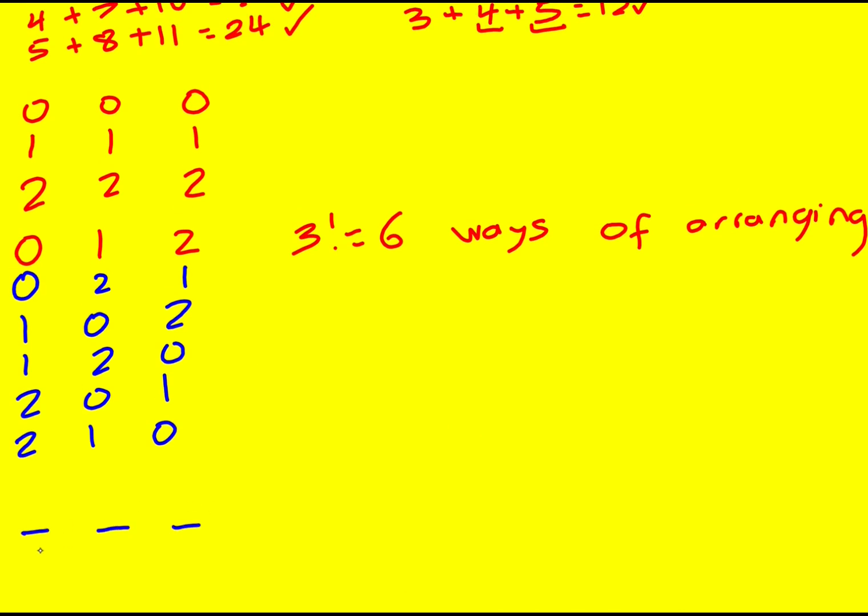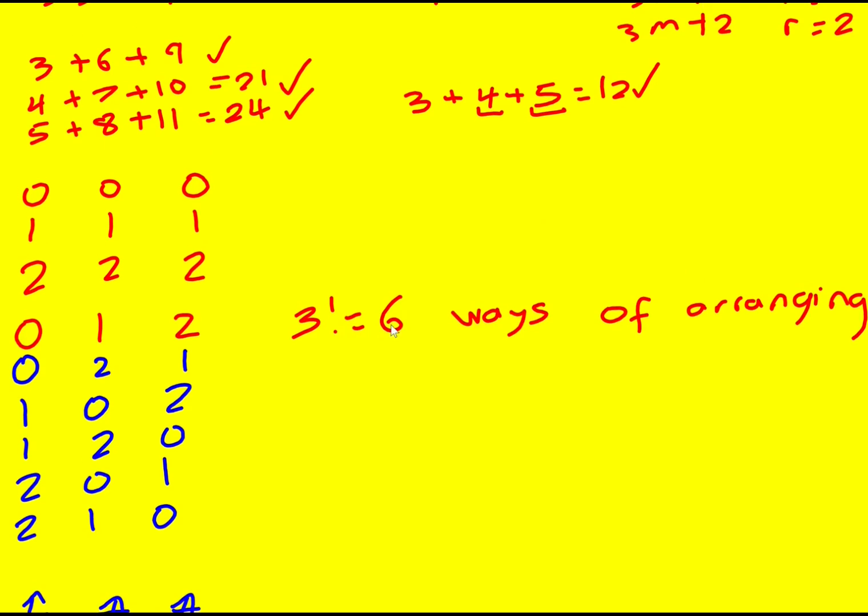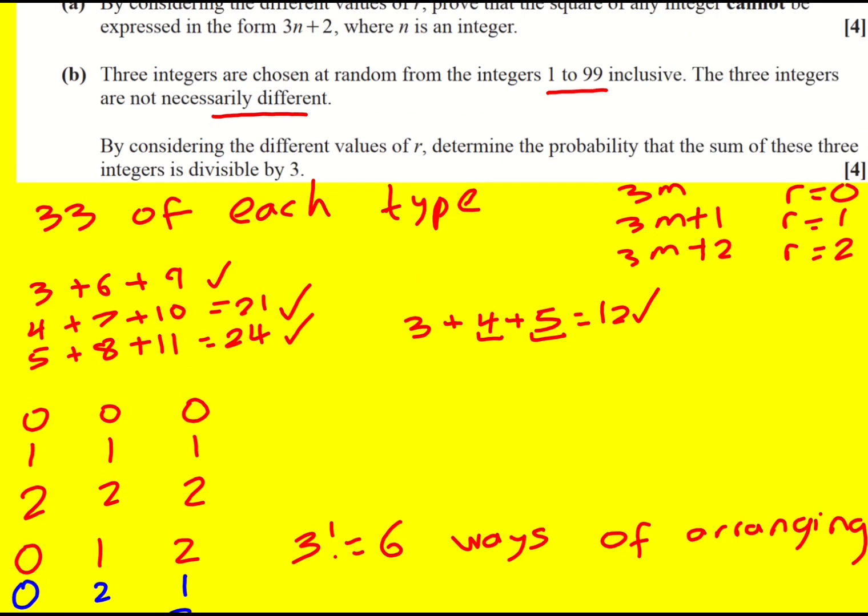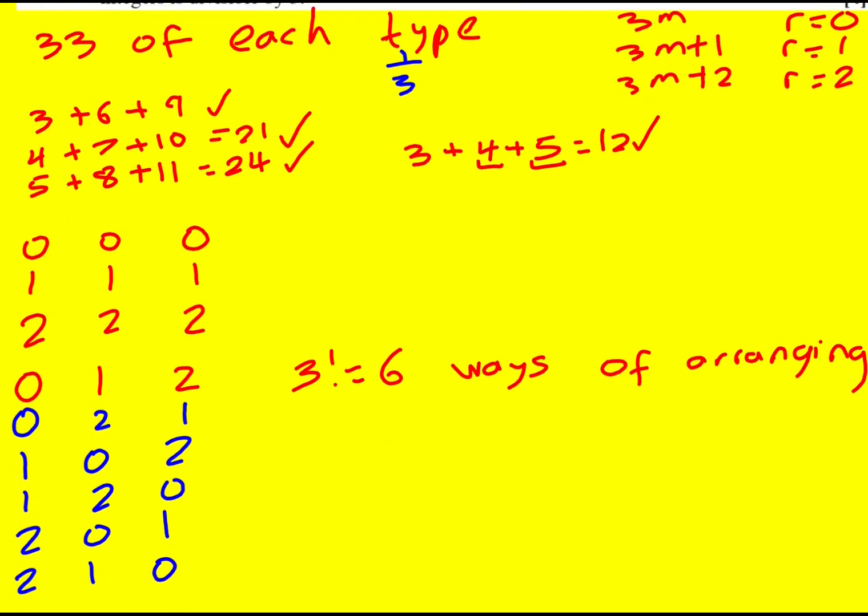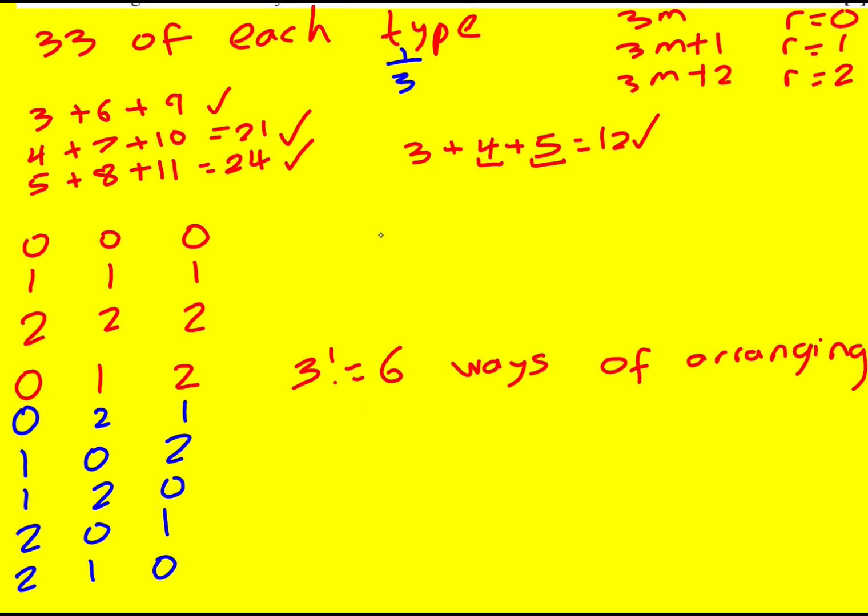Or you can say, right, I'm picking three things. There's three ways of picking the first number. And then there's two ways of picking the second number, because I can't pick the same one because it was 0, 1, and 2. They're not repeated. And then there's one way of picking the last one. So that gives 6. In any case, that's what you've got to realize. So now on to the probability. So for 0, 0, 0, there's going to be... Remember we said that there were 33 of each type, which is actually one-third of 99. So each one, each number has a one, each number type has a one-third chance being picked.